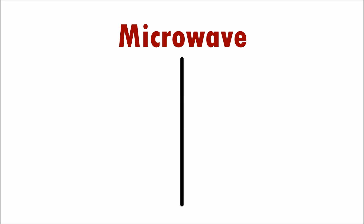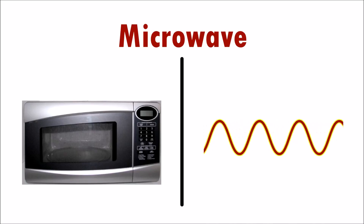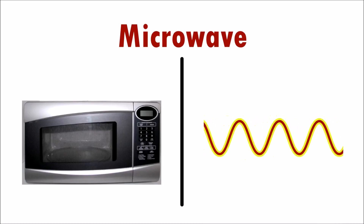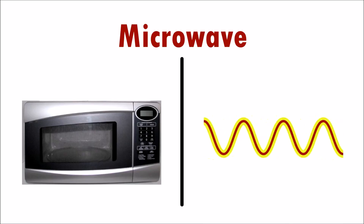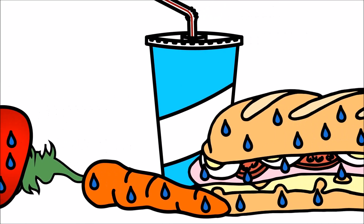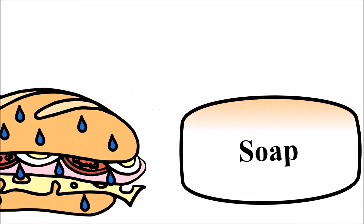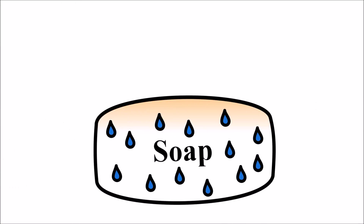The word microwave is used to describe different things. We use microwave ovens to heat our food, and microwaves are tiny invisible wavelengths that emit radiation. Almost all foods contain water.